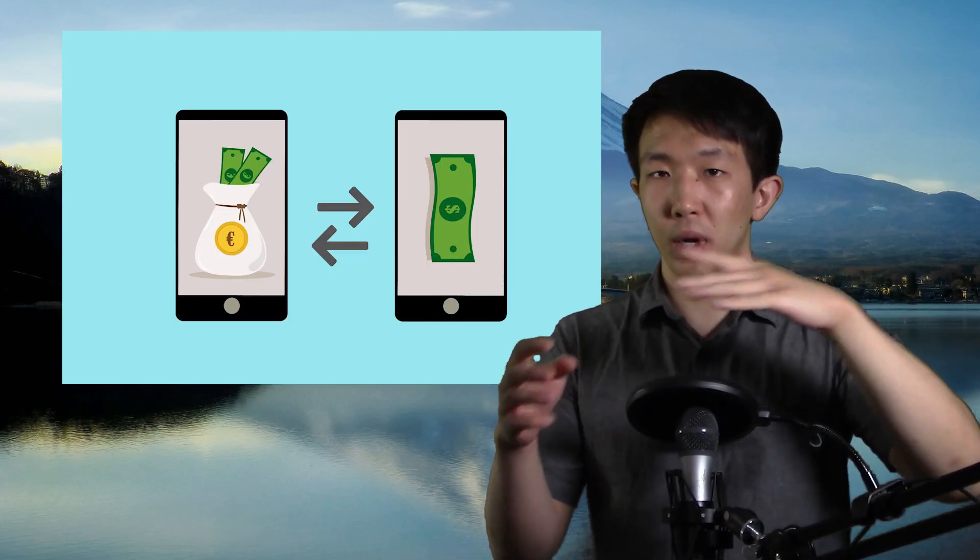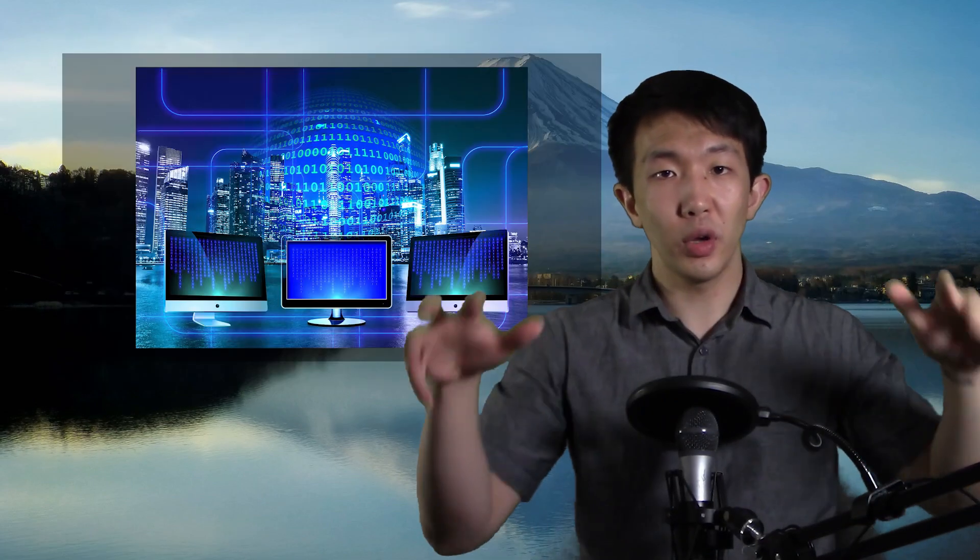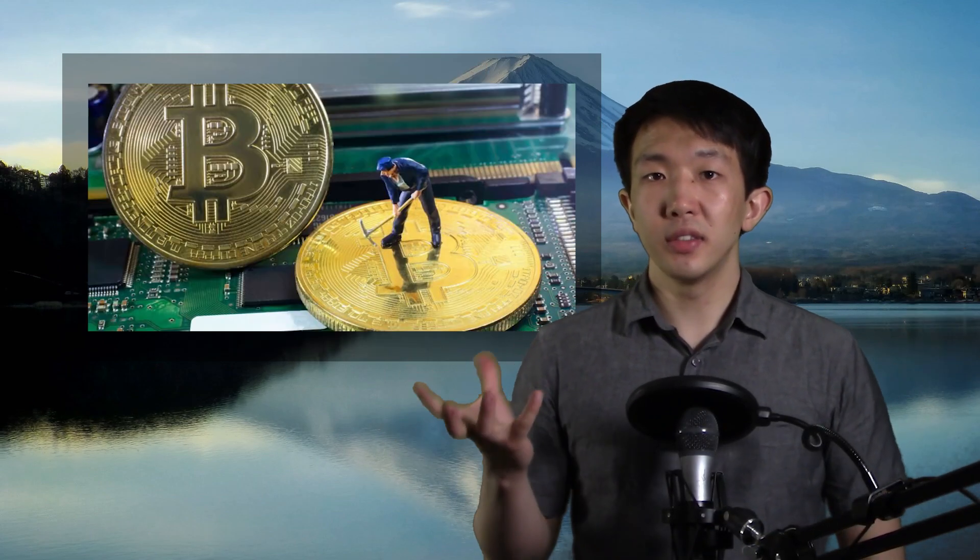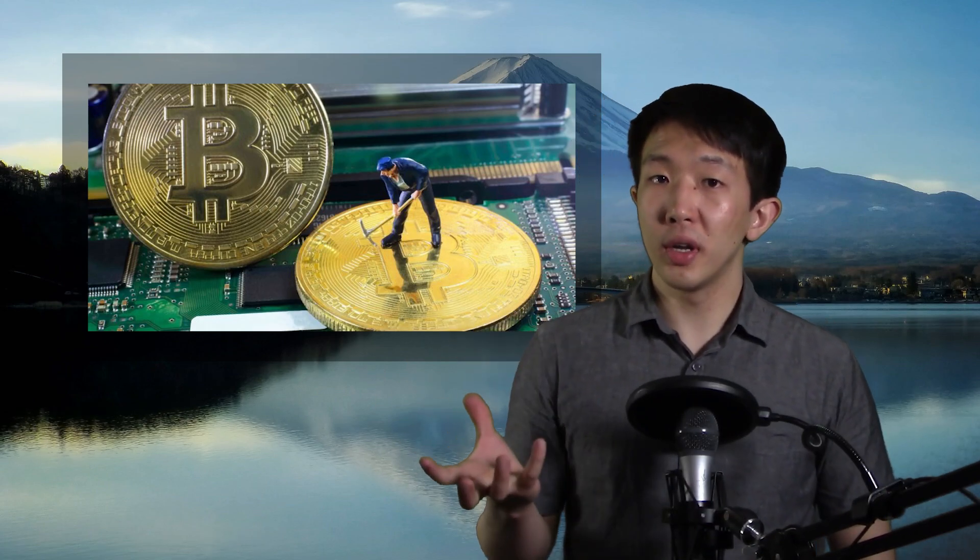Bitcoin is also powered entirely by its users, and anyone can participate in running Bitcoin. When a user sends Bitcoin to someone else, everyone's computers work together to secure this transaction. They also cross-check each other to make sure that nobody is lying about the transaction in order to benefit themselves. This is the essence of Bitcoin mining, and we will go more in depth in another video.